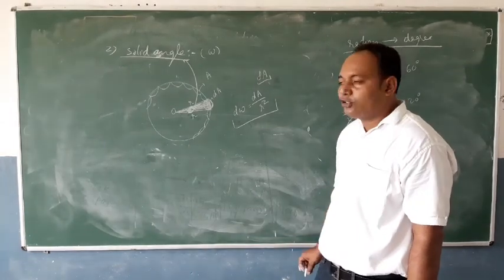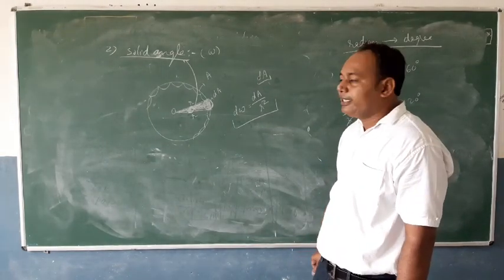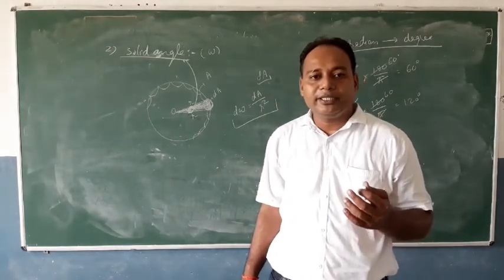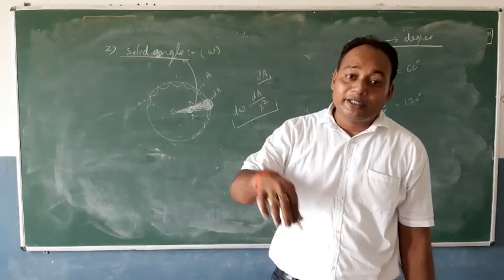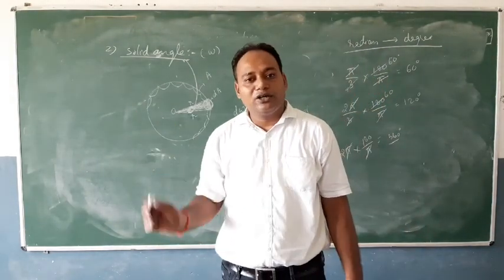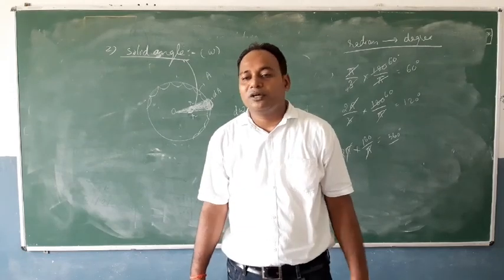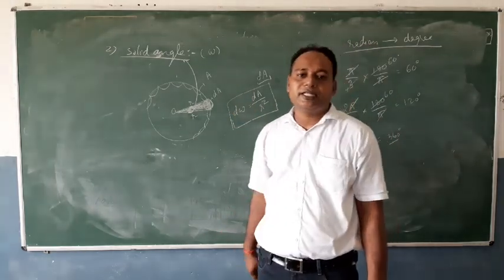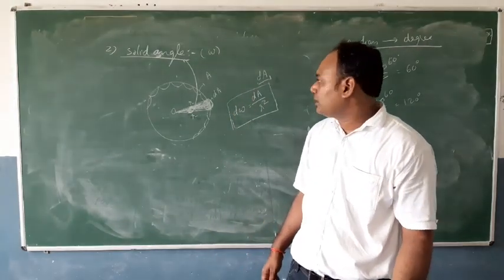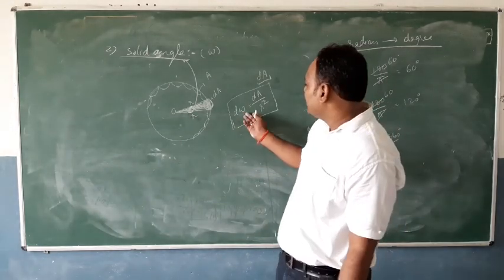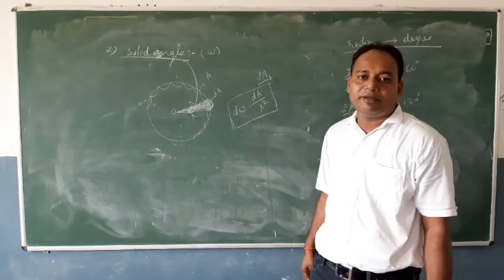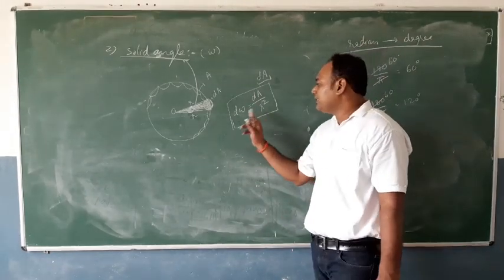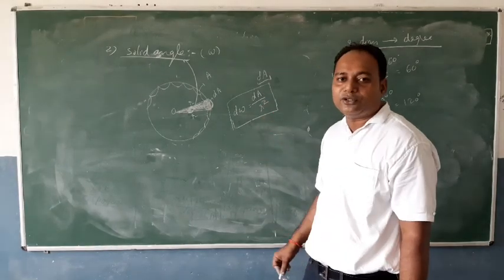So the solid angle dΩ is mathematically defined as the ratio of the area to the square of the radius of the sphere: dΩ = dA / r². Theoretically, it is defined as the angle made by an area of the sphere at the center of the sphere. Mathematically, it is the ratio of area on the sphere to the square of the radius.